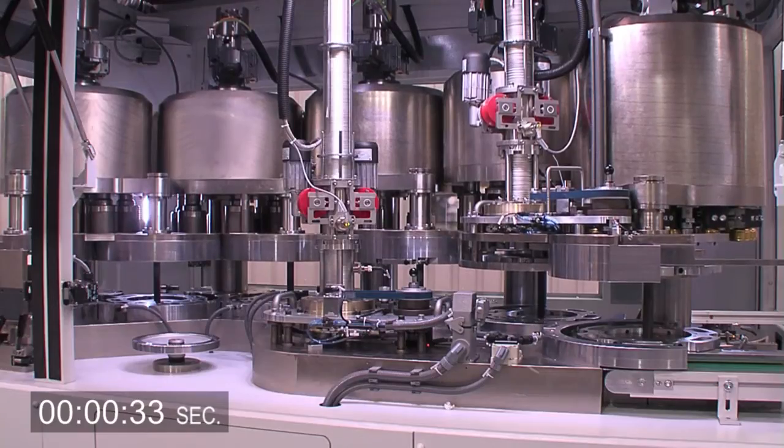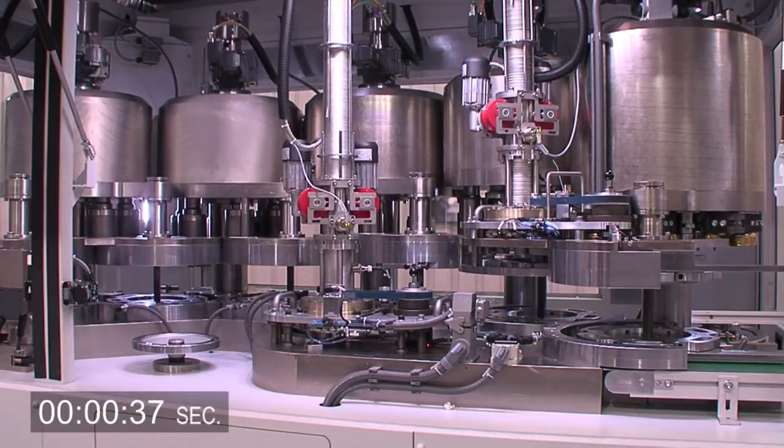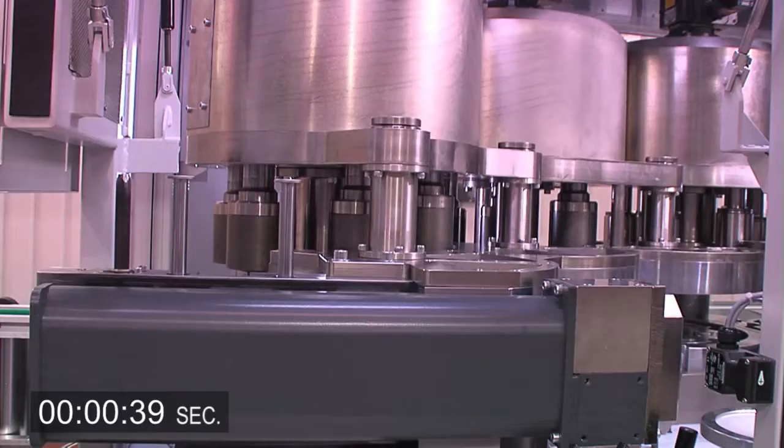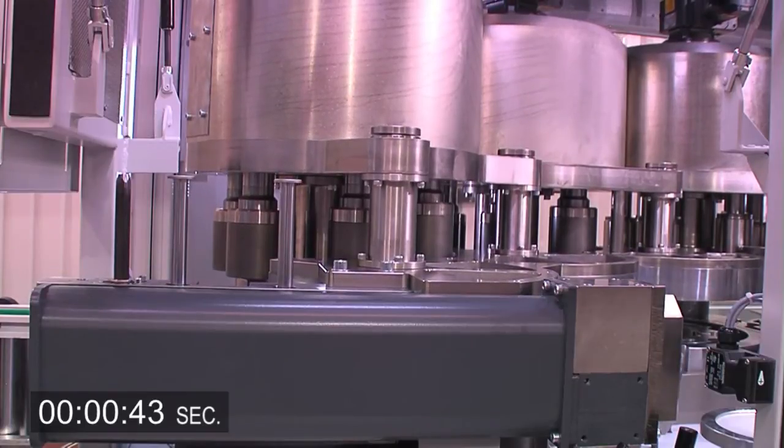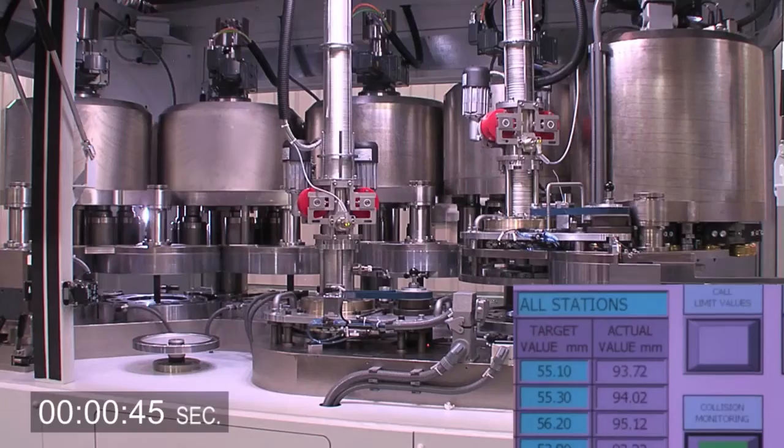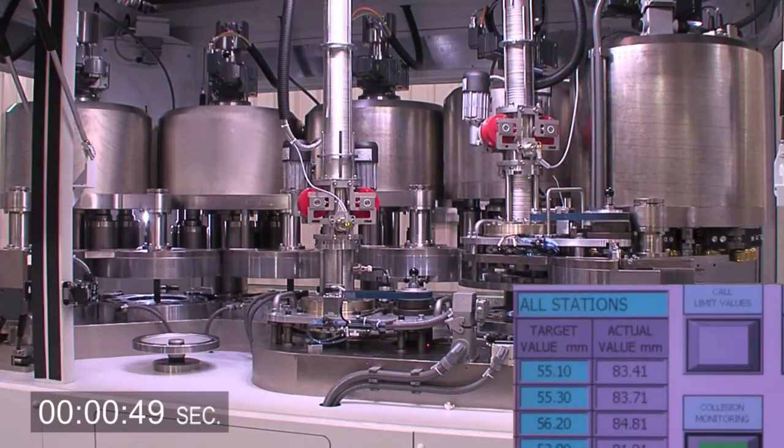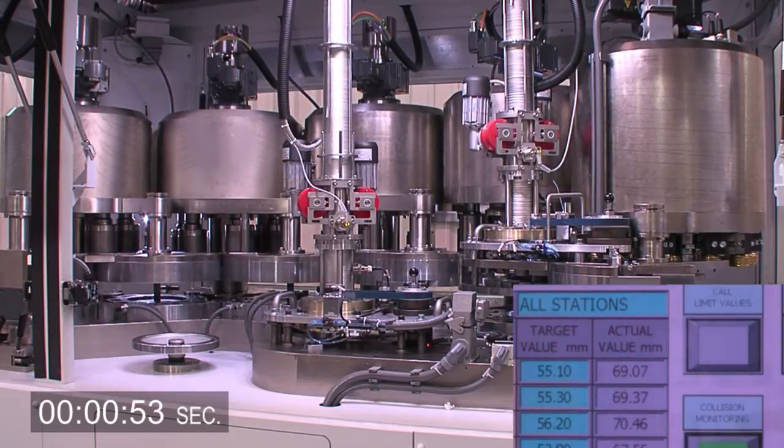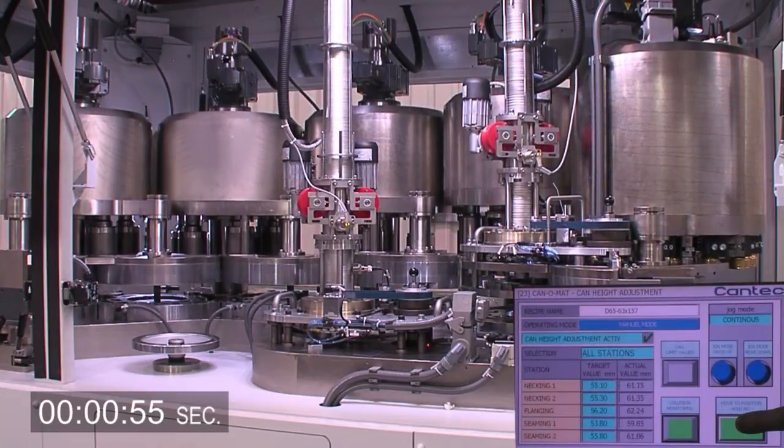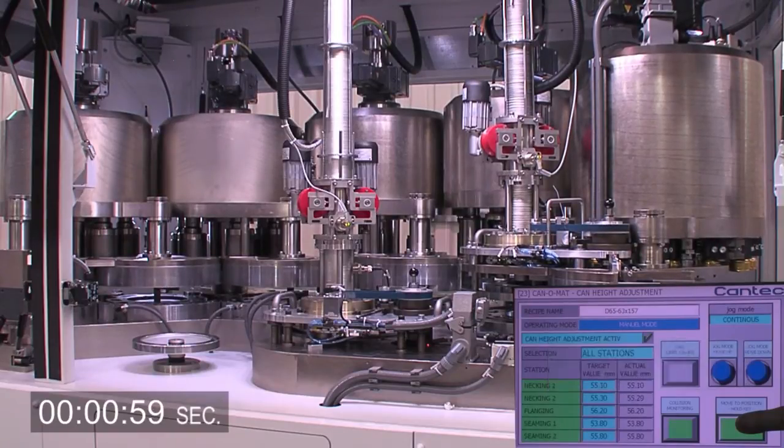Automatic height changeover also includes the magazine for the aerosol domes, as well as the infeed and discharge feed section of the machine. This also means that no tools are needed for adjustment. The target position has been reached in one minute and the machine is ready to start production with the new can height immediately.